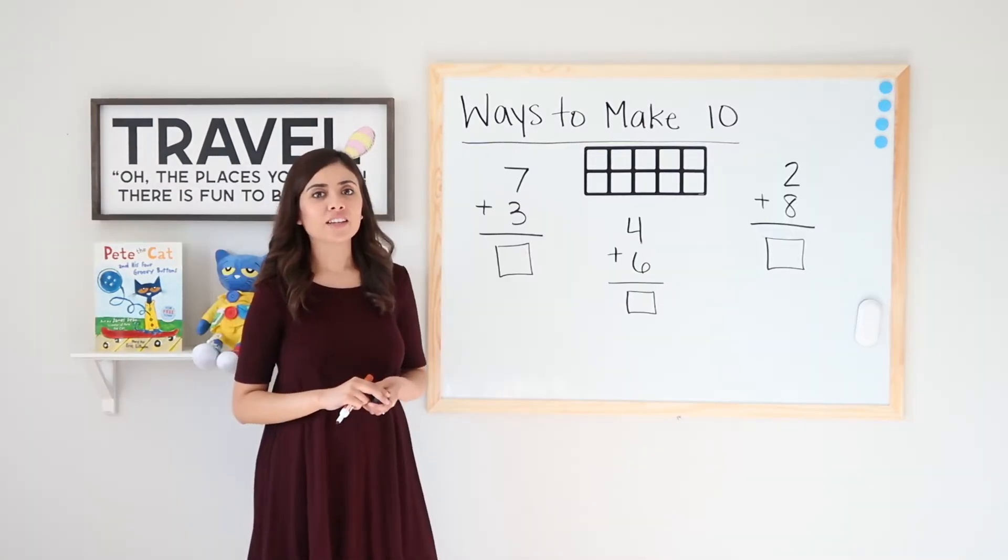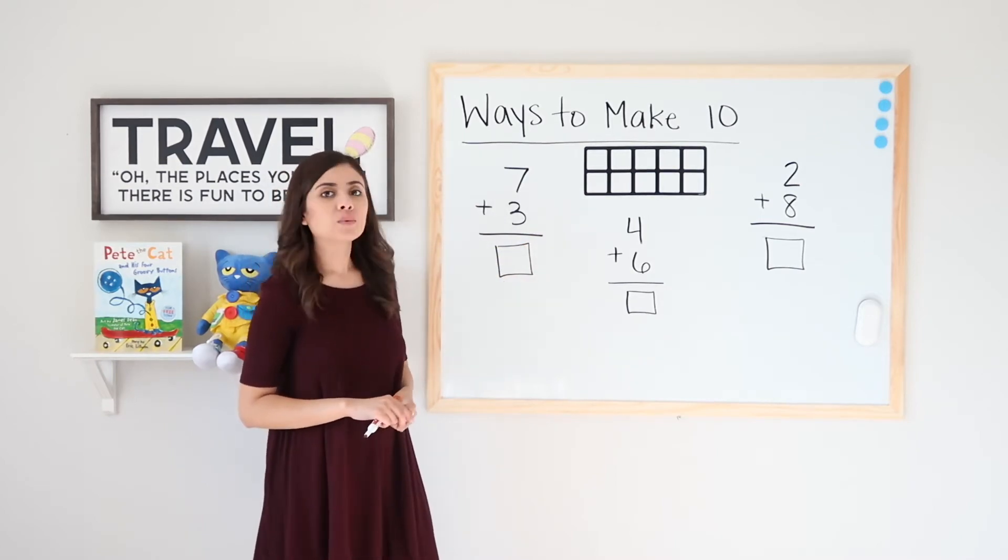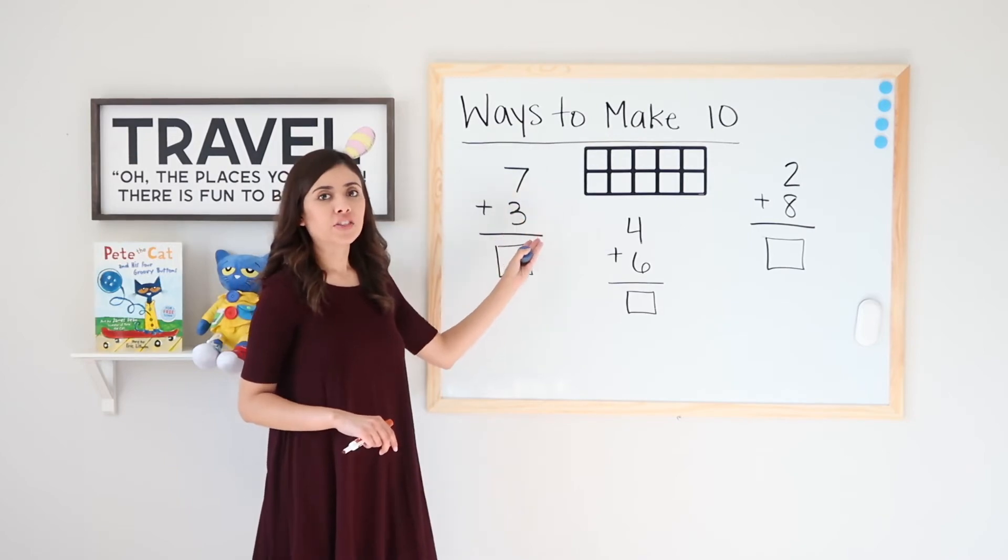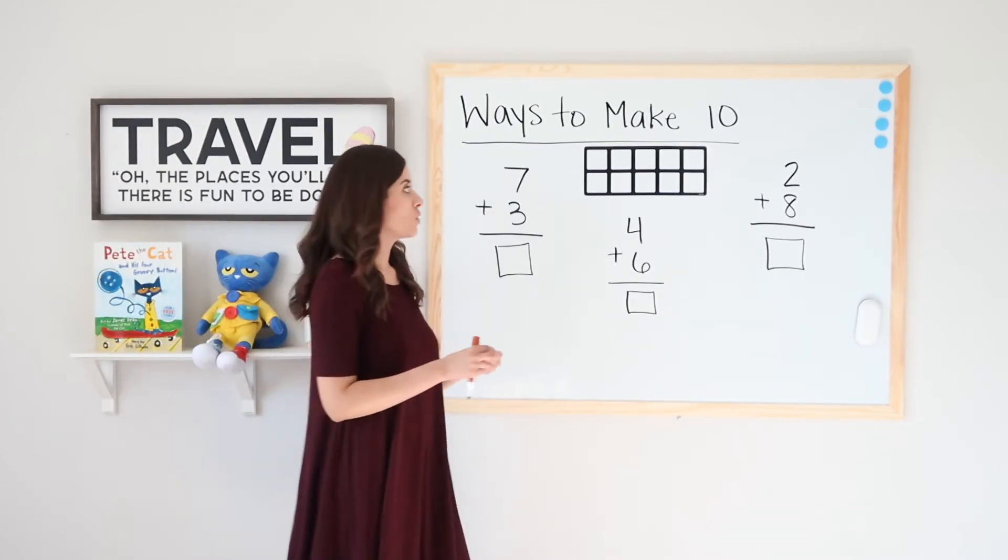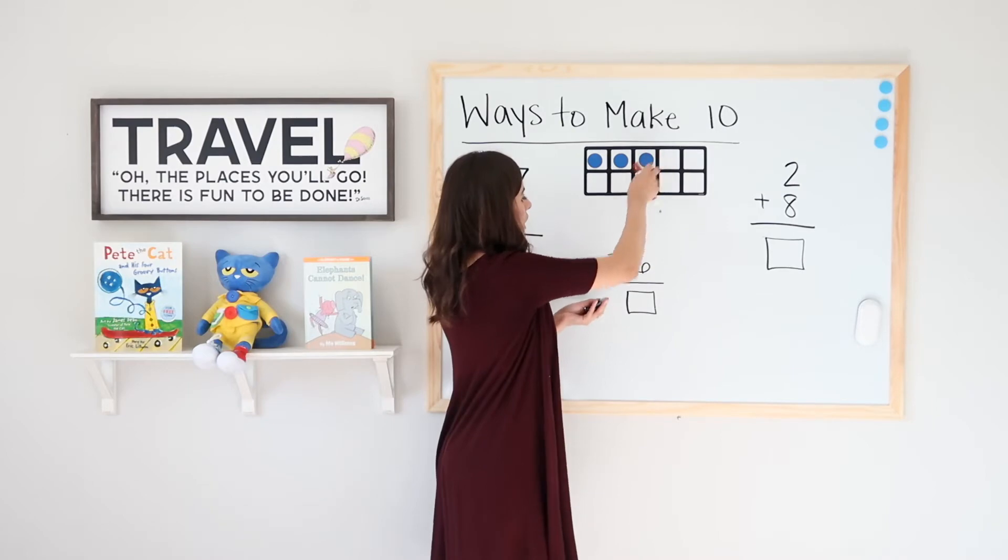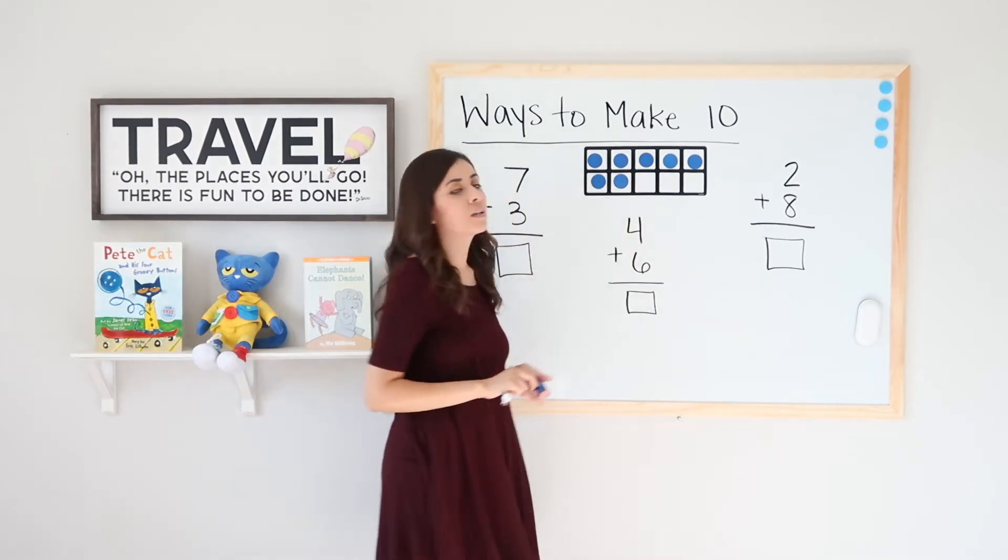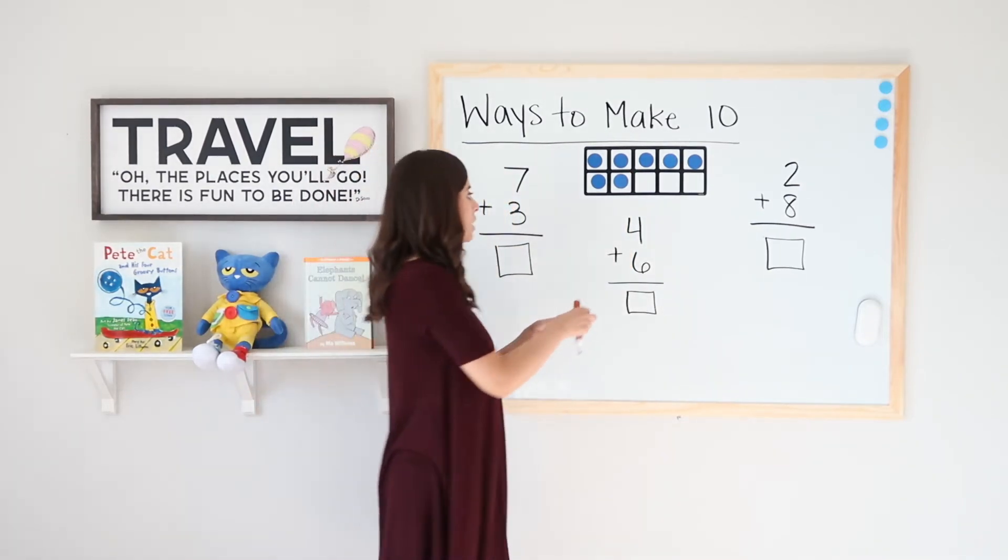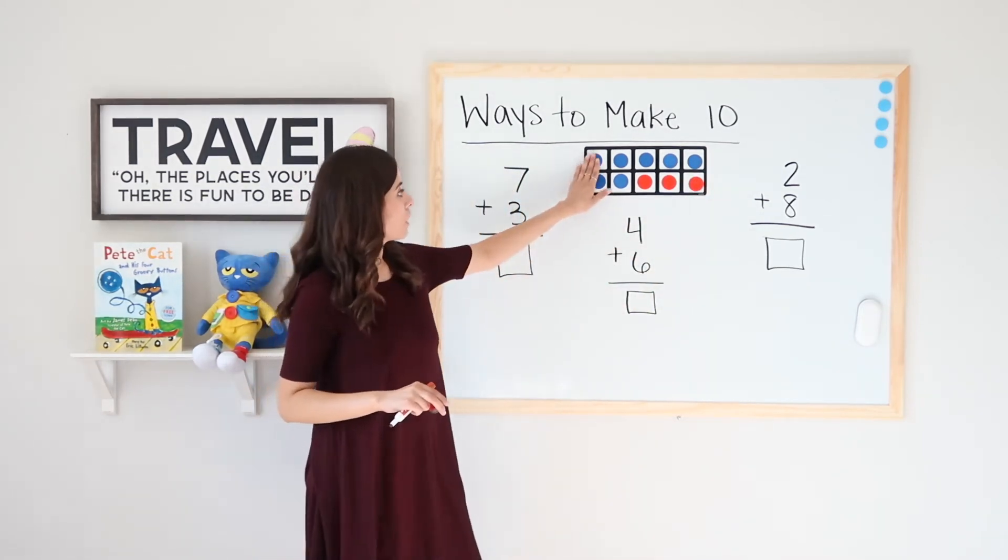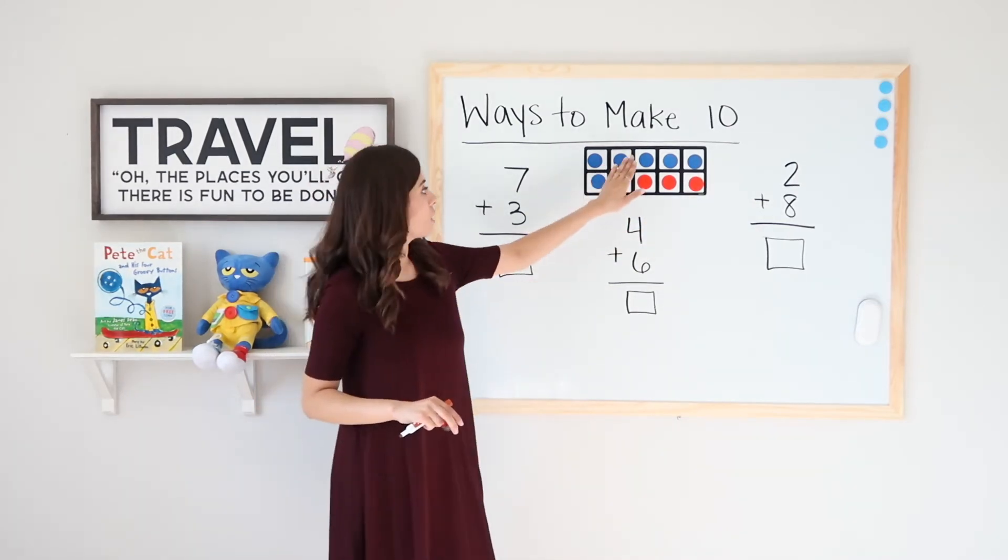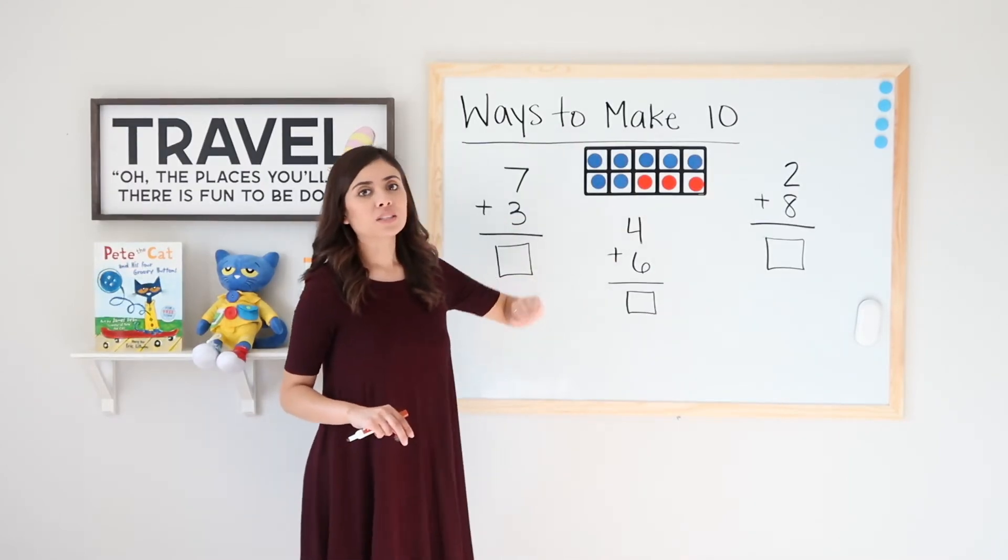Now time for some fun. I have seven plus three equals hmm. So I will start with seven blue dots, add three red dots, and then see how many I have in all. So seven blue dots. Ready? One, two, three, four, five, six, seven. Now I will add three red dots. Ready? One, two, three. Hey, I just filled up my whole ten frame.